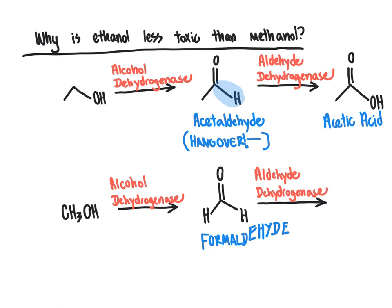Well, what happens when we oxidize formaldehyde is that in creating that new carbon-oxygen bond — the hallmark of oxidation — we end up creating as the product a one-carbon carboxylic acid. The name this most commonly goes by is formic acid. Formic acid may also sound familiar because this is the compound produced by fire ants that allows them to exert massive stings. So you can imagine that having formic acid accumulating within your internal organs would be a really, really bad thing.